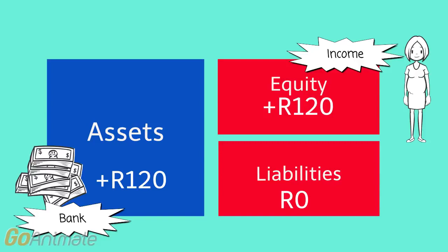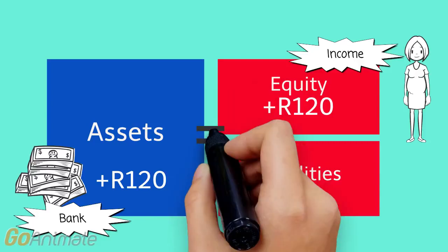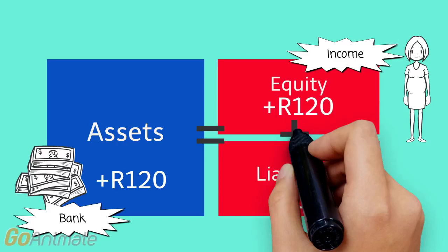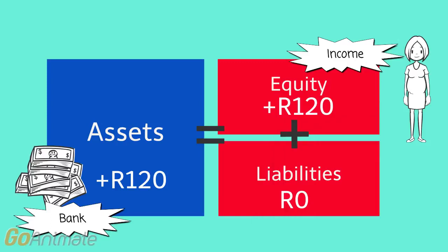So we see that assets — the bank balance — has increased by 120 rand, and equity has increased by 120 rand's worth of income. So the blue and red blocks are equal.